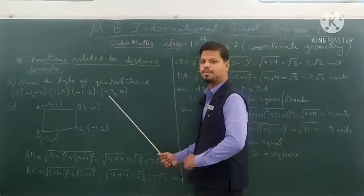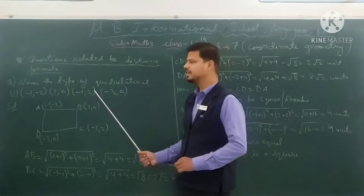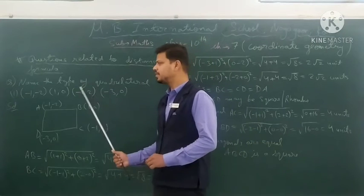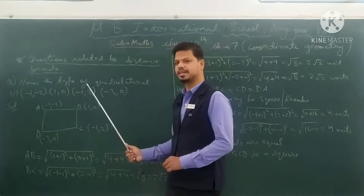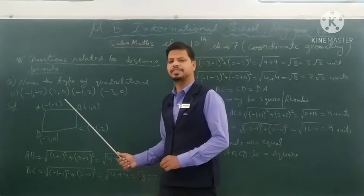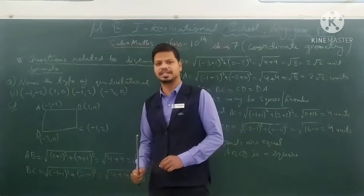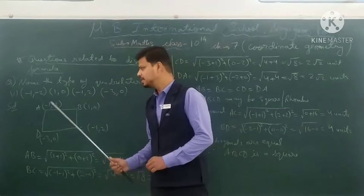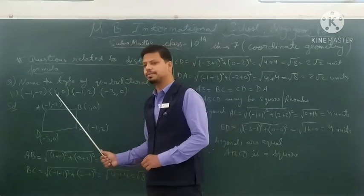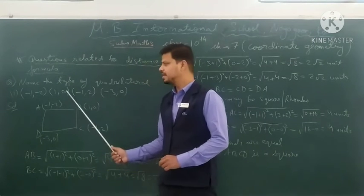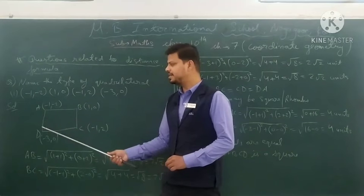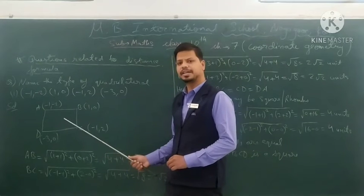Four points — four vertices — are given for a quadrilateral. We have to identify which type of quadrilateral it is. This style of question will come in the exam. What should we do? First, we will draw a rough diagram.